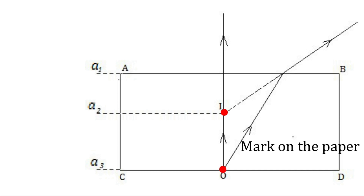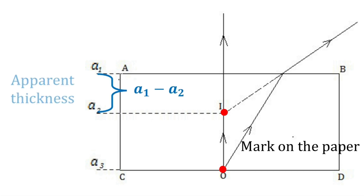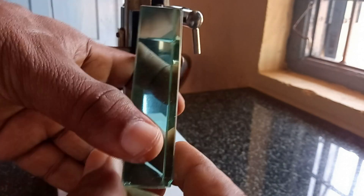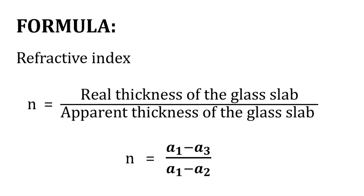Now we are going to look at our field of view. Observe the chalk dust and adjust the height to the top level of the glass slab. If we find out the difference between A1 and A2, we get the apparent thickness of the glass slab. The formula to find out the refractive index of the glass slab is the ratio of real thickness to apparent thickness.